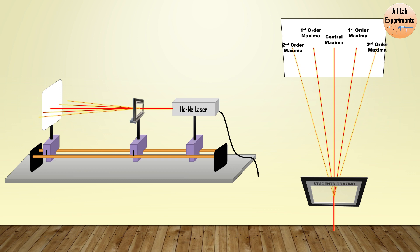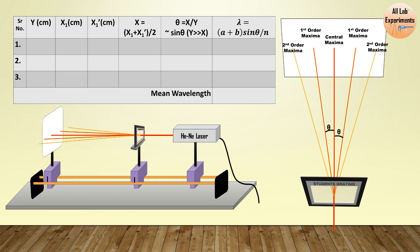Now to determine the wavelength of this laser light we need these angles, angle of deviation. And overall to perform this experiment we can construct a table like this. In this table we can see the second column Y in centimeter. This is the distance between the screen and the diffraction grating.